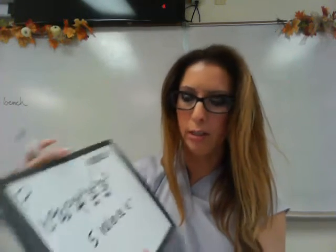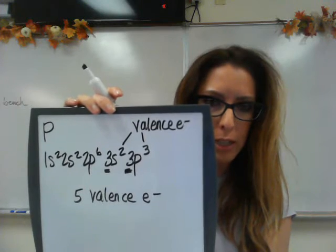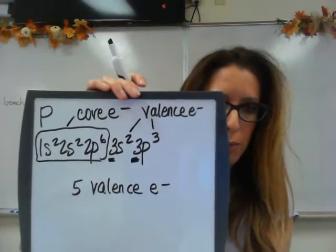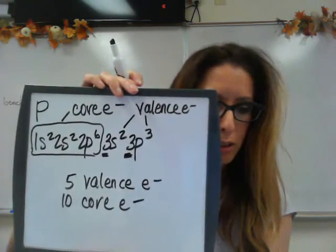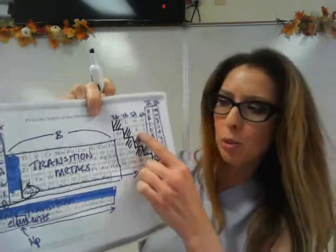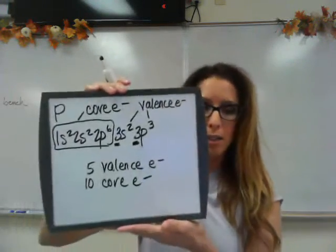So there are five valence electrons, and everything else is a core electron. The electrons in the 1s, 2s, and 2p are my core electrons — a total of 10 core electrons. The easy way is to look at phosphorus on the periodic table: it's in group 5A, so it has five valence electrons. That matches.